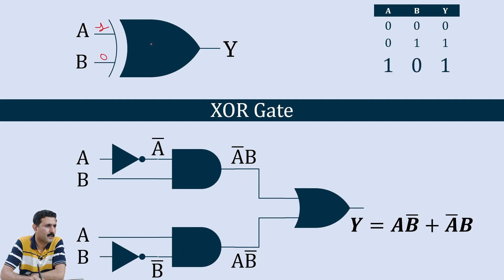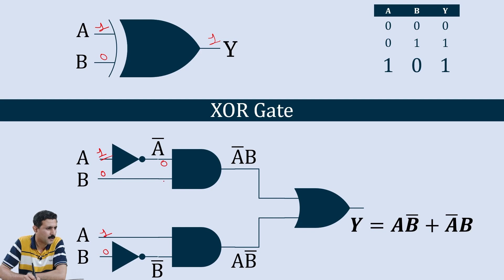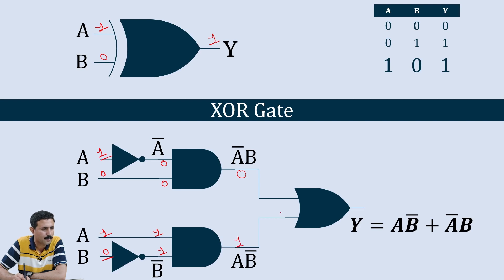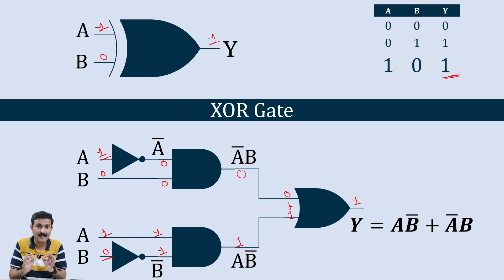Now with A = 1 and B = 0, the output is still 1. The NOT gate on A gives Ā = 0. AND of 0 and B (0) gives 0. The NOT gate on B gives B̄ = 1. AND of A (1) and B̄ (1) gives 1. The OR gate has inputs 0 and 1, so 0 + 1 = 1. The output is 1, confirming that when both inputs are different, the output is 1.